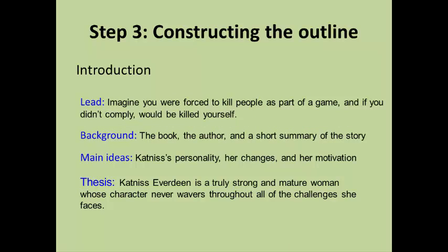In my character analysis on Katniss, the first part of my outline would look something like this. My lead would say: Imagine you were forced to kill people as part of a game, and if you didn't comply, would be killed yourself. The background information I'm going to give is the book, the author, and a short summary of the story. The main ideas are Katniss's personality, her changes, and her motivation throughout the story. My thesis is the same that we came up with in step two.